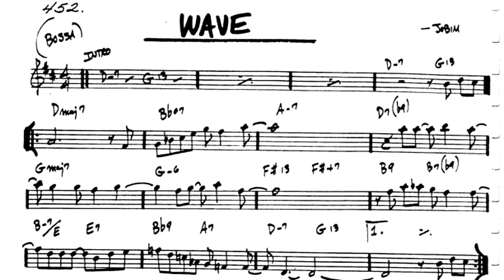Let's go ahead and skip forward to the 10th bar, where we'll have the A7 on the last 2 beats of that bar. That's going to function as V7, taking us back to the I minor 7 to IV7 vamp in bars 11 and 12. Again, bars 11 and 12 are another good example of using modal interchange.